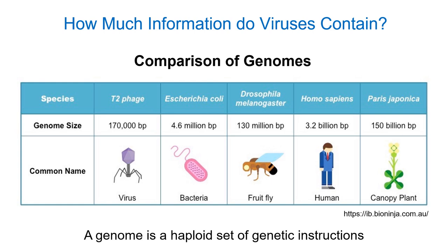Our main focus today is viruses — I'll come back to prions at the end of the topic. Viruses are essentially packets of genetic information, so let's look at just how much information there is. Humans are diploid organisms, meaning we have two sets of information — one from our father and one from our mother. The DNA in a human egg or sperm cell represents the human genome. Bacteria and viruses only have one set of information — let's compare the two.